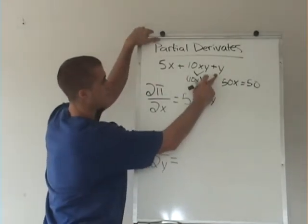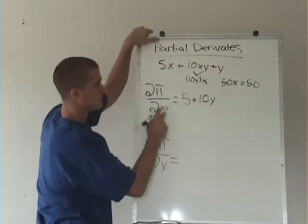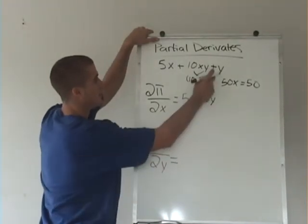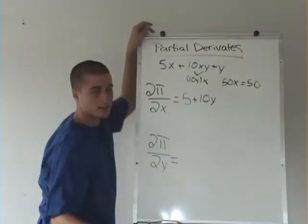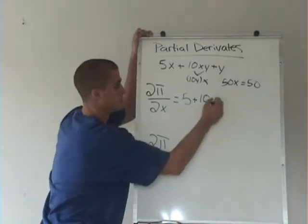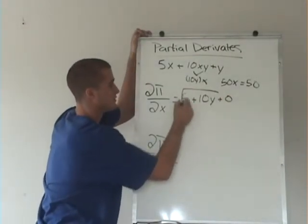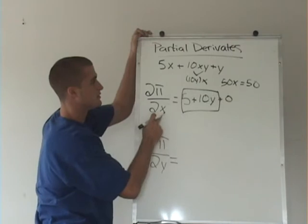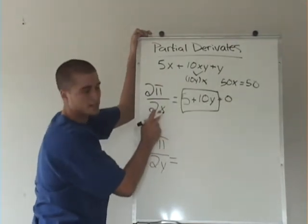And then with the y here, if we're taking the partial derivative with respect to x, this y is treated like a number, so the derivative of a number is 0, so plus 0. So this right here is the partial derivative of this function with respect to x.